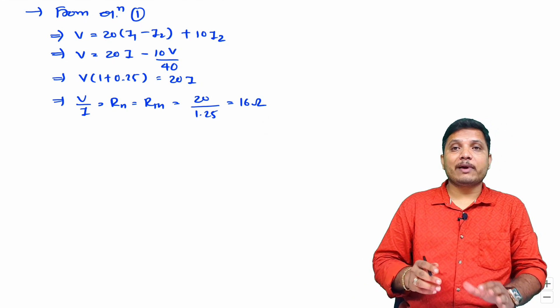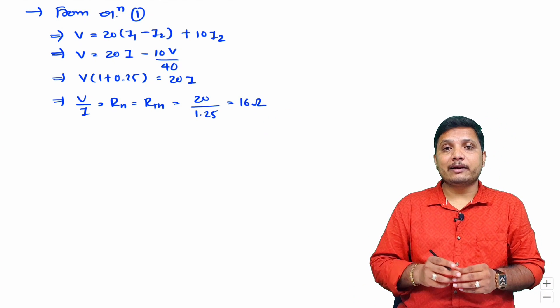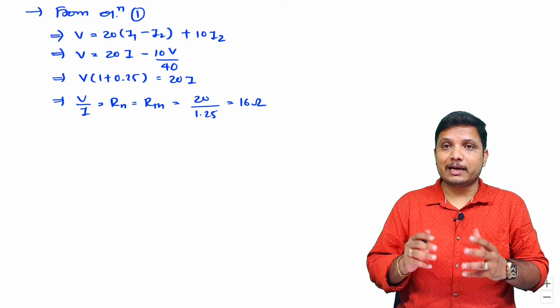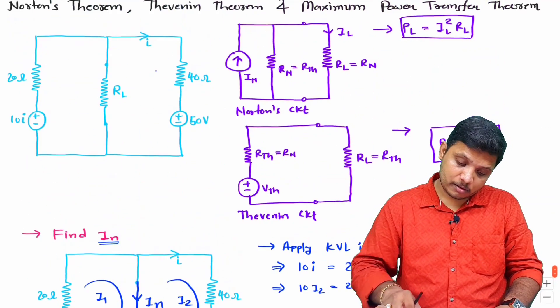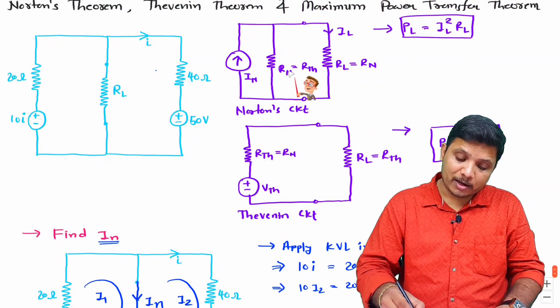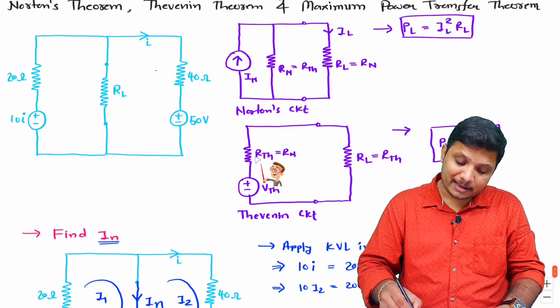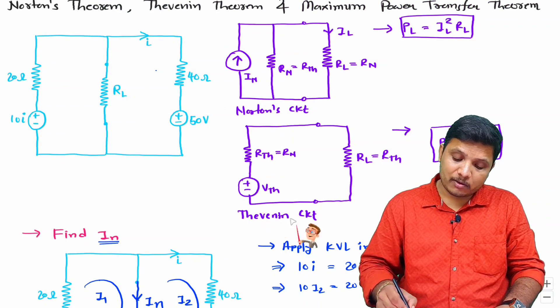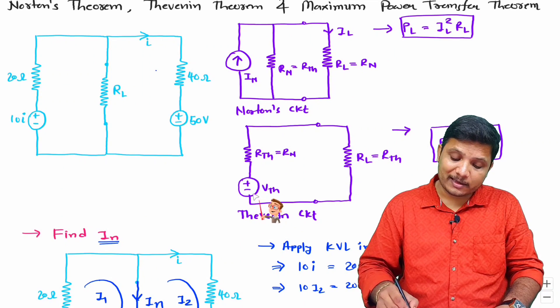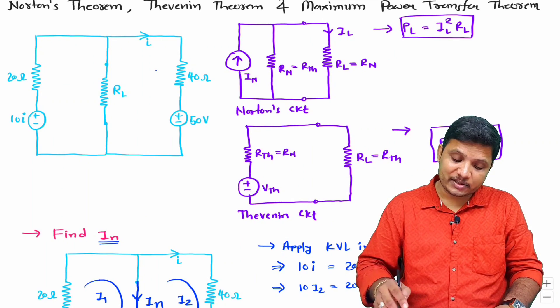Solving 20 divided by 1.25 gives 16 Ohms. So the equivalent resistance R_n and R_th both equal 16 Ω. Now for Thevenin's equivalent circuit, we solve for V_th.